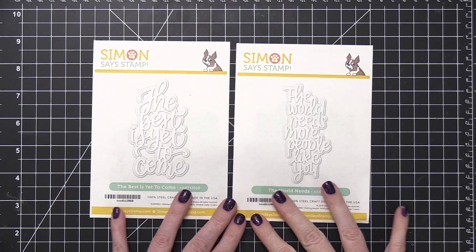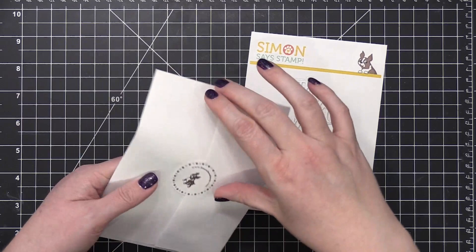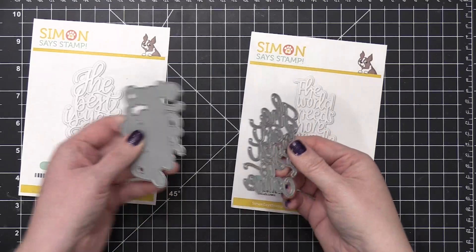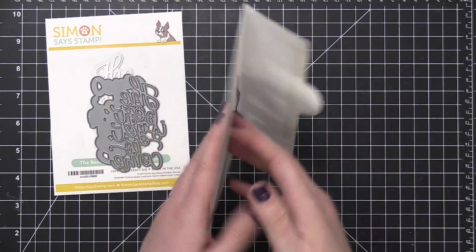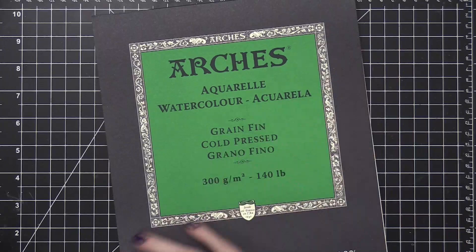Hi everyone, Kristina Werner here. Welcome to another video for SimonSaysStamp.com. Today I'm going to be using two brand new die sets that are included in the December 2019 release. I'm using The Best Is Yet To Come and The World Needs. These are two greeting dies that I designed using my calligraphy and hand lettering.